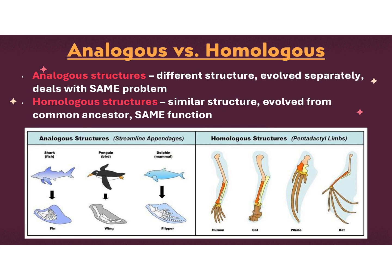A homologous structure — 'homo' meaning the same — is where you get a similar structure evolved from a common ancestor. The example here is the human, cat, whale, and bat limbs. You can see they all have that upper bone connected to a shoulder joint, the two middle forearm bones, wrist bones, and then digit bones. These are homologous — they're developing from the same ancestor.